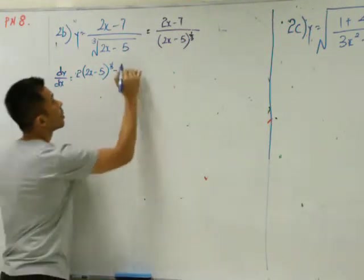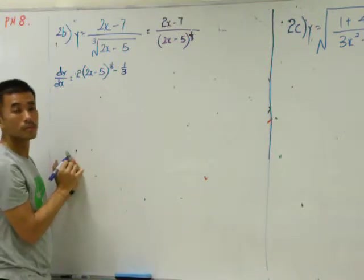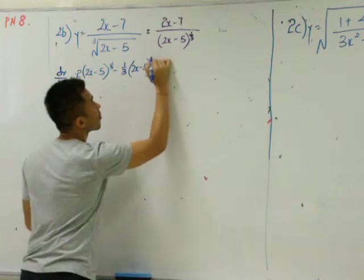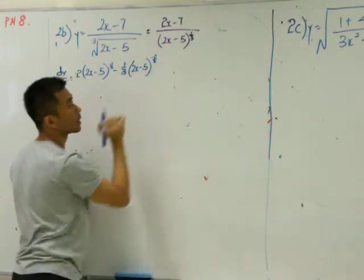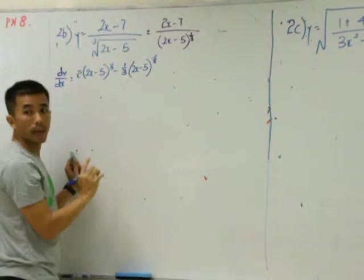Bring down the power. 1/3 minus 1 is negative 2/3. Done already? 2/3 minus 1 is negative 2/3. You will get 2.